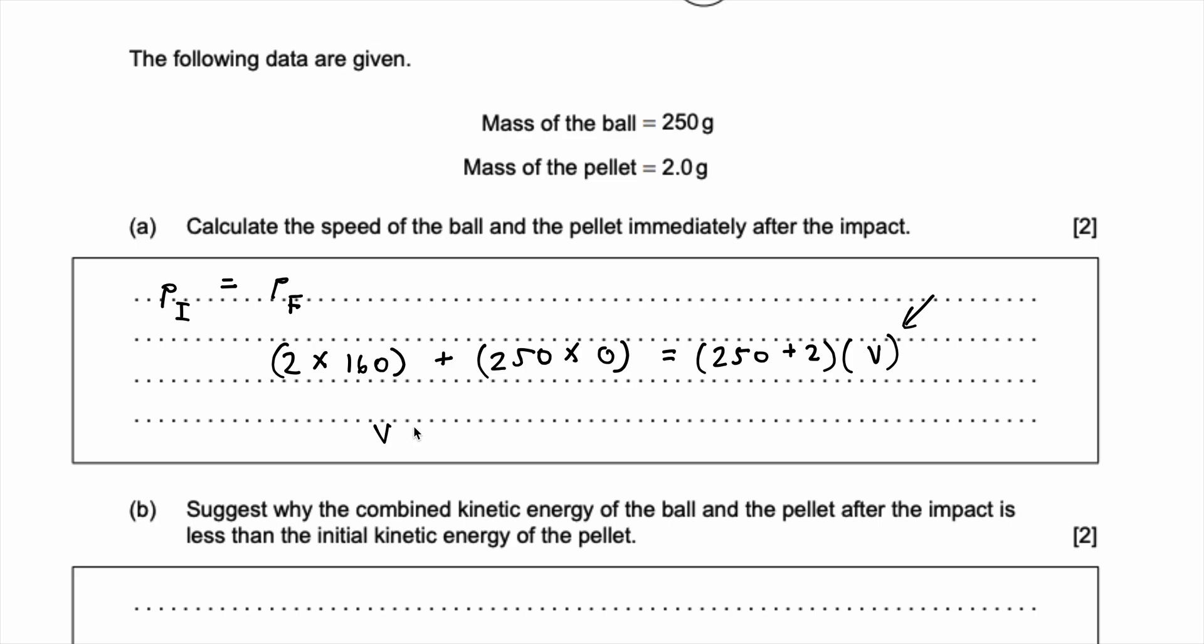So V essentially becomes, this just becomes zero, and the final velocity or the velocity after the impact is 320 which is 2 times 160 over 252. That becomes equal to 1.27 or approximately equal to 1.3 meters per second.